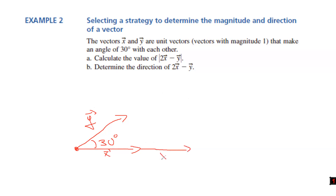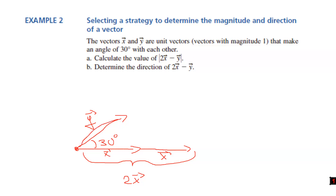We construct a triangle and we know the angle between the two sides is 30 degrees. To find the length of the third side, we use the cosine law. Let's call this resulting vector C. So modulus of C squared equals modulus of y squared plus modulus of 2x squared minus 2 times modulus of y times modulus of 2x times cosine of C.